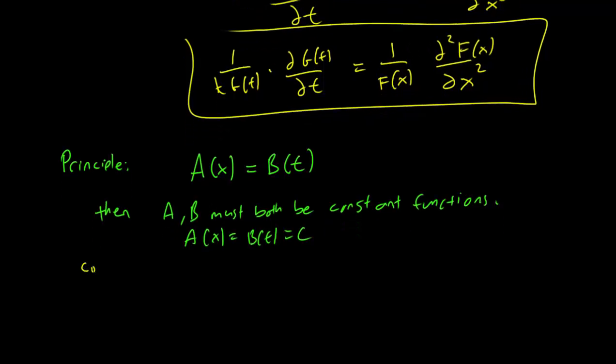Let's compare B(t) at t equals 0 and t equals 10, say. We know that B(0) is equal to A(x). But A(x) doesn't depend on time, so it's the same for time 0 and time 10. This is also equal to B(10).